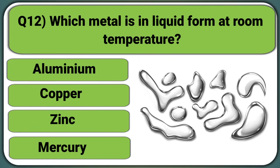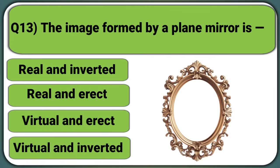Which metal is in liquid form at room temperature? Aluminium, Copper, Zinc, or Mercury. Answer: Mercury.